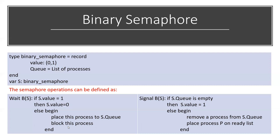In the signal operation: if s.queue is empty, meaning no process is waiting in the queue, then s.value remains 1, meaning the critical section is unoccupied and free for the next process to occupy. If the queue is empty with no process, we simply set s.value to 1.